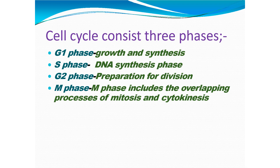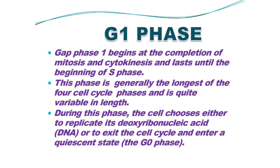After G2 phase, M phase comes, which is the mitotic phase that includes the overlapping process of mitosis and cytokinesis. G1 phase is the gap phase one. It begins at the completion of mitosis and cytokinesis and lasts until the beginning of the S phase of the interphase. G1 phase is generally the longest phase of the cell cycle and is quite variable in length. During this phase, the cell chooses either to replicate DNA or to exit the cell cycle and enter a quiescent state, also called the G0 phase.